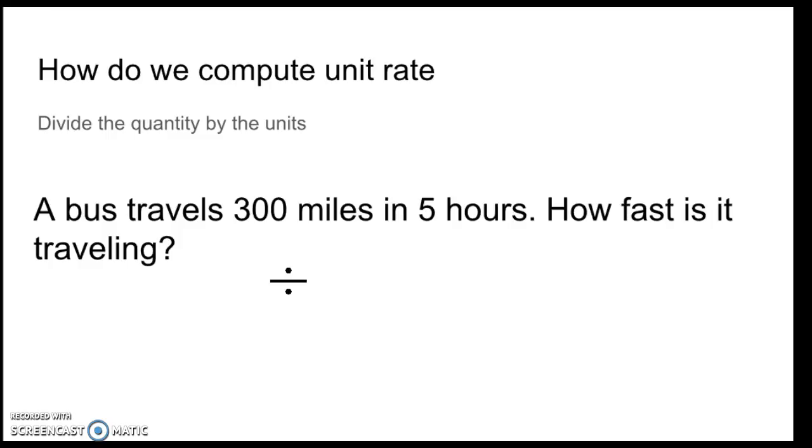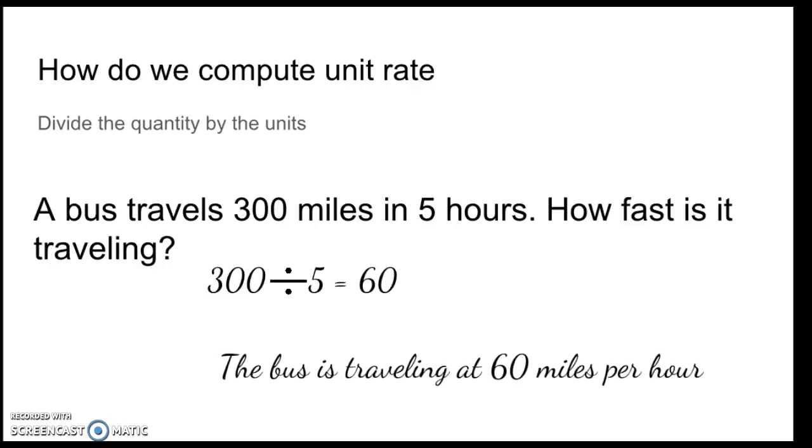So, we are just going to divide the quantity by the units. The quantity 300 divided by the units, which is hours. So, 300 divided by five equals 60. The bus is traveling at 60 miles per hour.